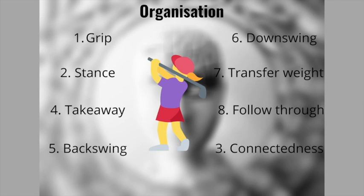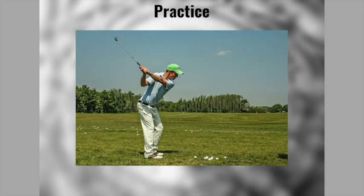Seventh is practice — repeat the information over and over. This creates a memory trace which is repeatedly shuttled between short-term memory and long-term memory. The more we can shuttle information between STM and LTM, the more it will embed and consolidate into long-term memory.